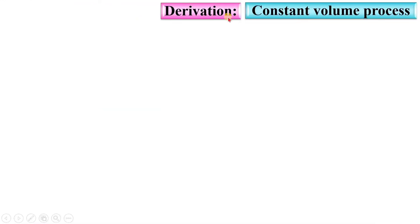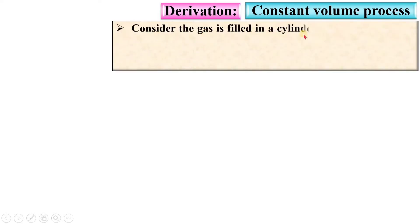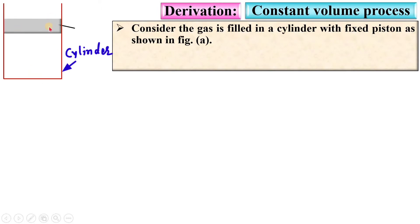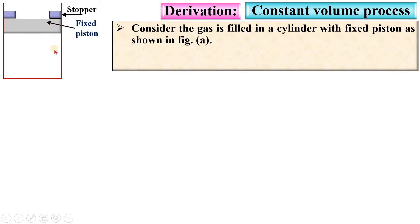Let us see the derivation of the different terms for the constant volume process. Consider the gas is filled in a cylinder with a fixed piston, as shown in figure A. This is the cylinder and this is the piston. Keep in mind that this is a fixed piston because it is a constant volume process, so there is a stopper here so that the piston cannot move. This is the system filled with gas.